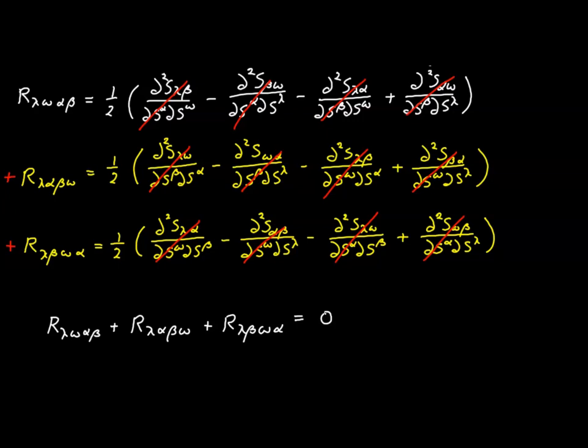This result is a very interesting and important relationship known as the first Bianchi identity.